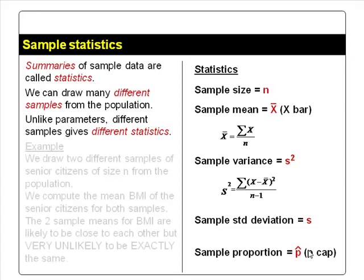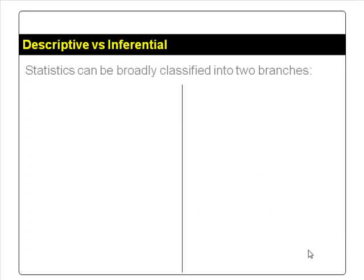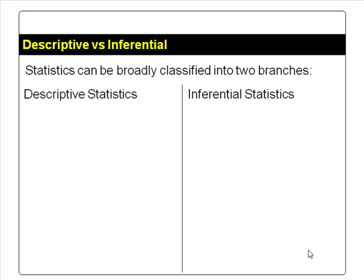For example, if we draw two different samples of senior citizens of size n from the population and compute the mean BMI for both samples, the two sample means are likely to be close to each other but very unlikely to be exactly the same. Statistics can be broadly classified into two branches: descriptive statistics and inferential statistics.